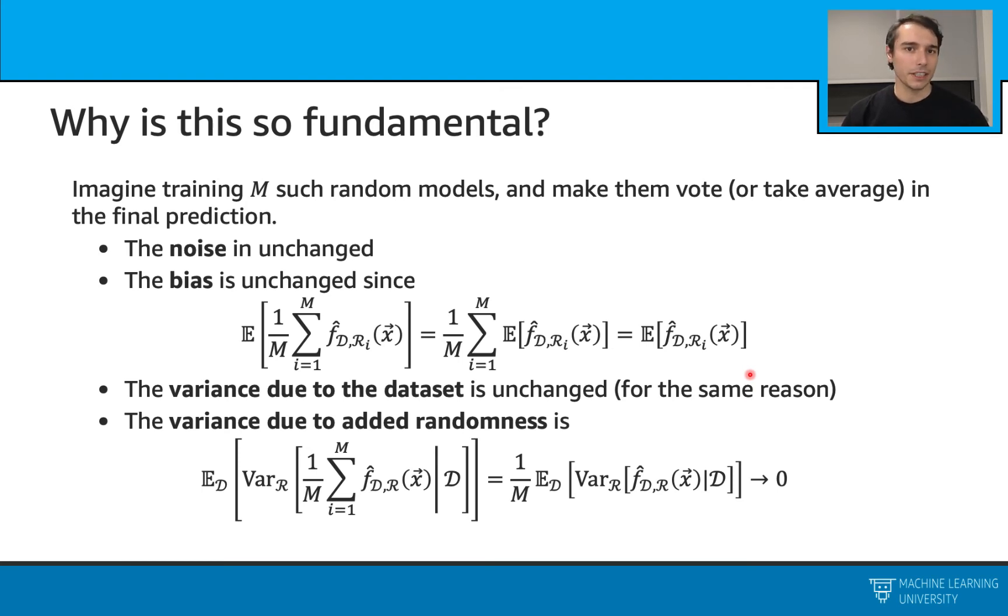The bias doesn't change because when we take this one over m and this summation, when we do the mathematics, this one over m goes out. We have the expectation of the summations and overall we end up with the same expected value. So it doesn't change.